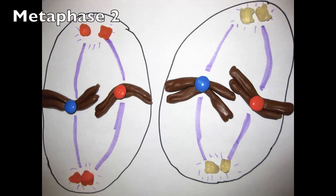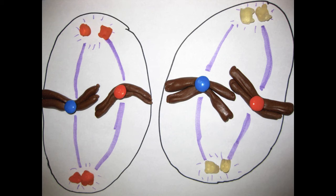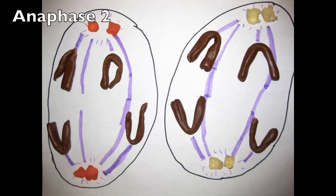Chromosomes are again lined up on the metaphase plate, attached to microtubules at their kinetochore in metaphase II. But because of crossing over, the sister chromatids are no longer identical.